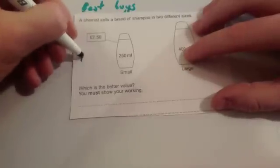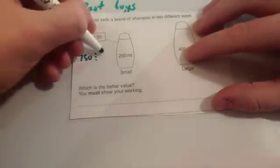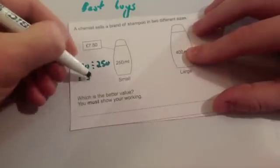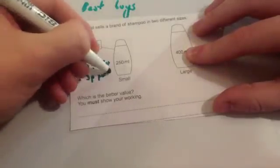For the small option, you're going to do £7.50 divided by 250 milliliters. When you divide that, you'll find it's three pence per milliliter.